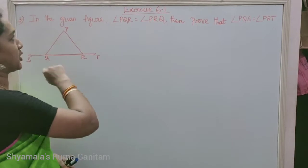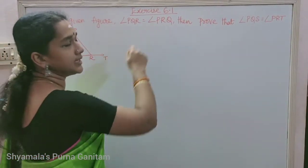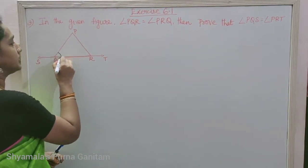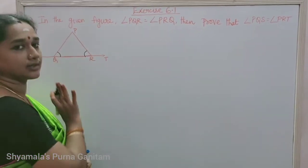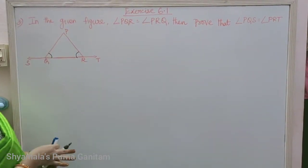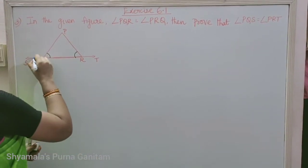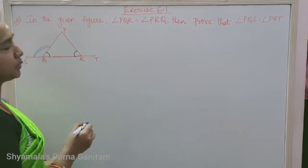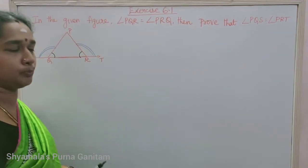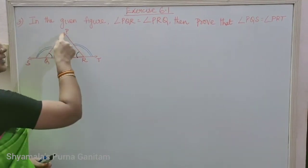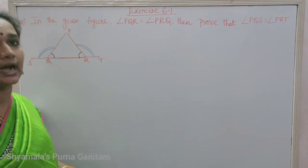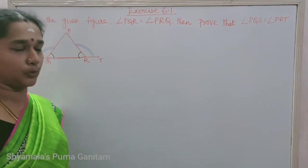The third sum in Exercise 6.1: in the given figure, angle PQR is equal to angle PRQ. These two angles are equal — that is given in the question. You are asked to prove that angle PQS is equal to angle PRT.